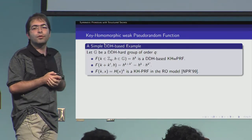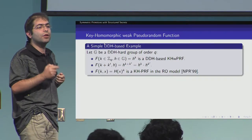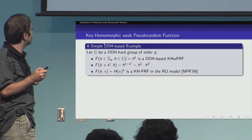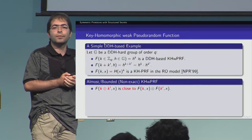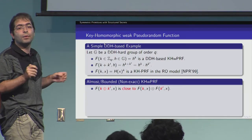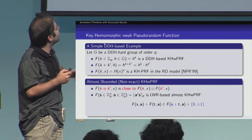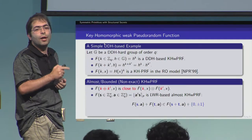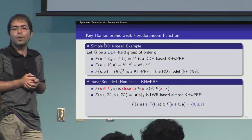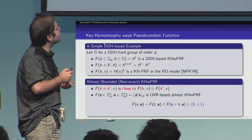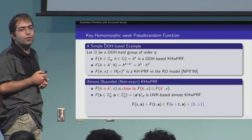The definition of a keyhomomorphic weak PRF requires that function evaluations on the sum of two keys equals the product of function evaluations on each individual key. It's also possible to consider relaxed definitions. One relaxed definition is an almost or non-exactly homomorphic weak PRF, where we require F(K + K', X) to be close to F(K, X) · F(K', X) instead of exactly equal. As a simple example, consider the function where input and key space are both Z_Q^N and the function is defined as the inner product of two vectors over Z_Q, rounded modulo P. This has been shown to be a weak PRF by Banerjee, Peikert, and Rosen in 2012, and it satisfies an almost keyhomomorphism property: F(S, A) + F(T, A) is very close to F(S + T, A).